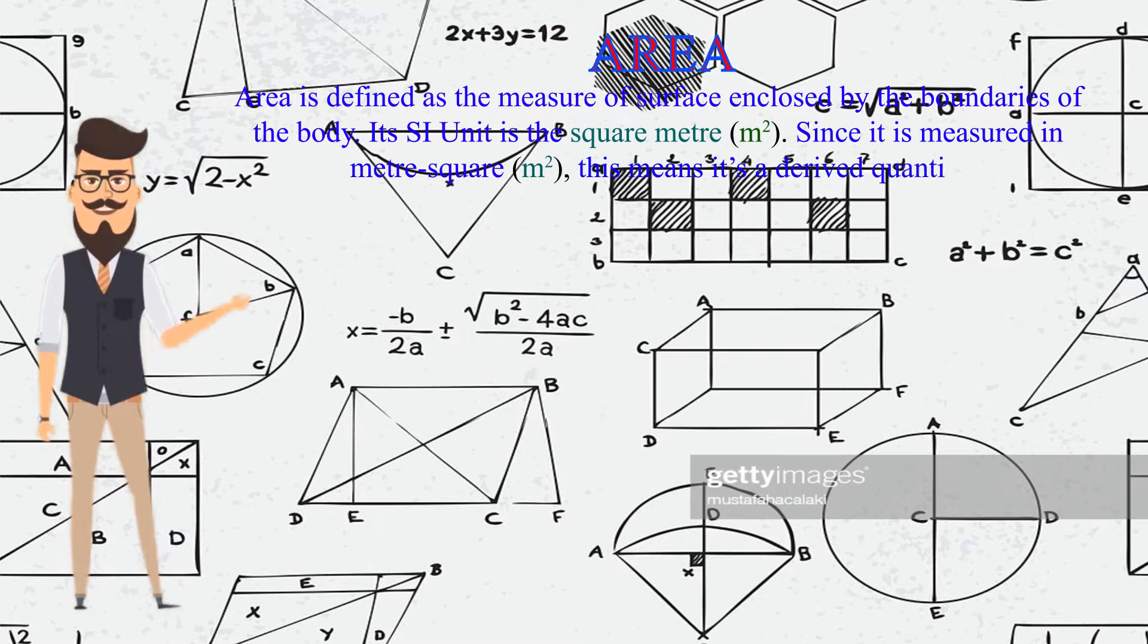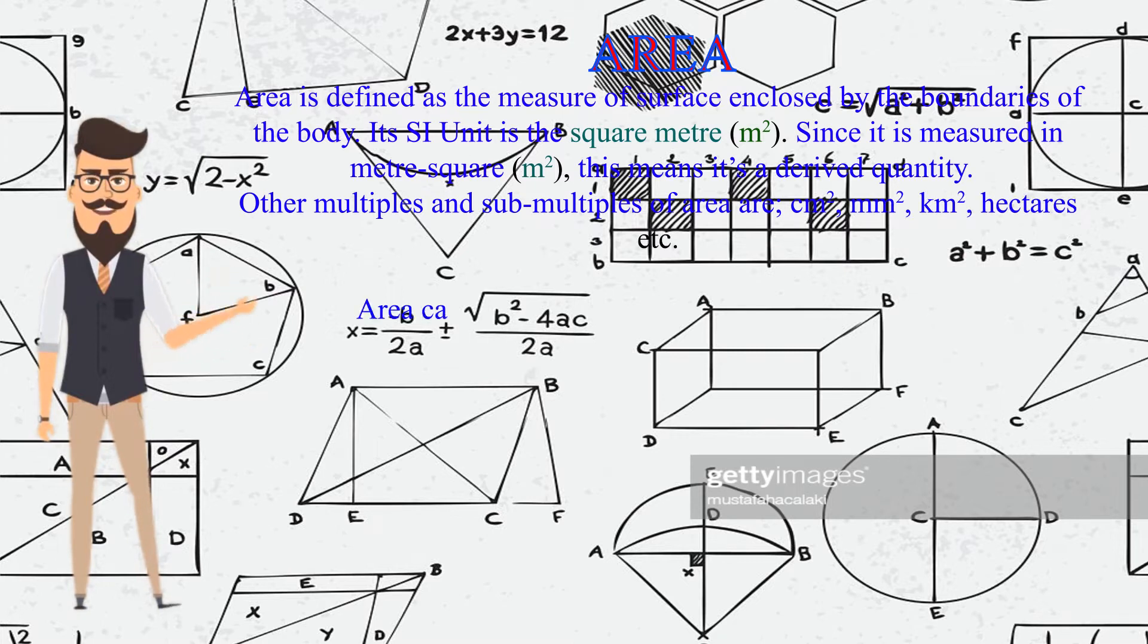Other multiples and submultiples of area are cm squared, mm squared, km squared, hectares, etc. Area can also be estimated or calculated accurately.